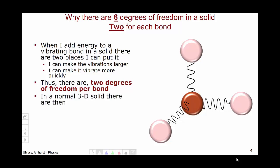And therefore, in a 3D solid, there are two degrees of freedom per bond: size of vibration and speed of vibration, times three bonds, gives us a total of six degrees of freedom for a three-dimensional Einsteinian solid.